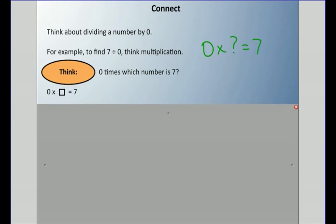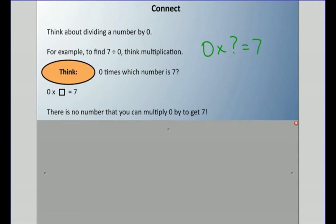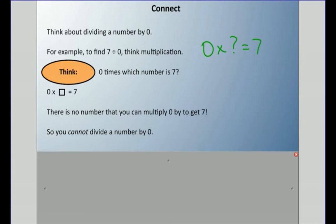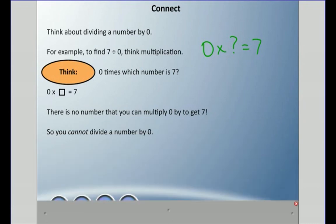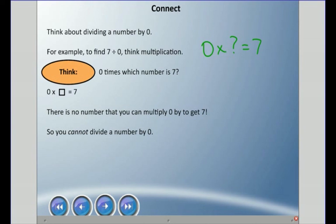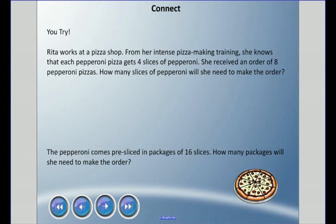If you're paying attention, there's a problem here. There is no number you can multiply by zero to get seven — zero times whatever is always going to be zero, it cannot be seven. Therefore, you cannot divide a number by zero. Take a calculator and try seven divided by zero — you will get an error. It is impossible.